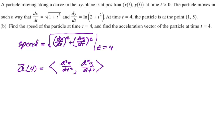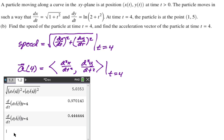So at t equals 4, here is my screenshot, because I've already defined dx of t and dy of t in the previous part. I just need to find the square root of dx of 4 squared plus dy of 4 squared, and I get 5.035. And then I found the derivative of dx at 4, the derivative of dy at 4, and I'm going to write that in vector form. So 0.970, I always go three decimals, no matter what, and then 0.444. All right, next part.